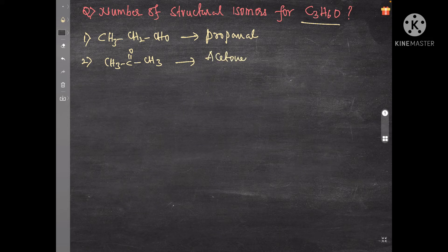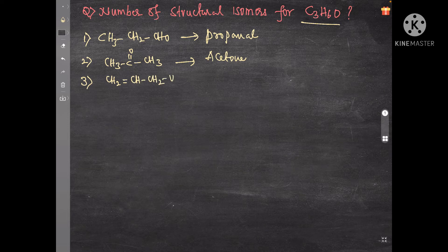is acetone. Third one is CH2=CH-CH2OH, which is allyl alcohol. The name of this compound is